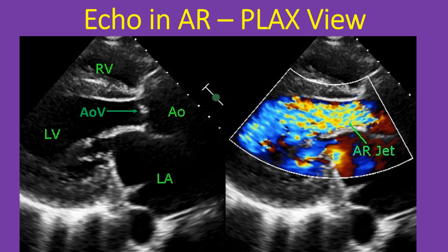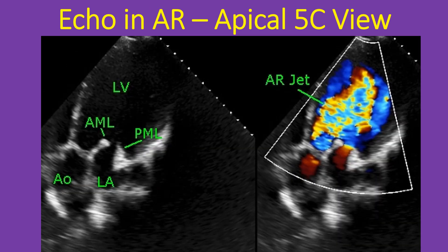Dilated left ventricle, aorta, and left atrium also suggest that the AR is severe. An apical 5-chamber view shows the dilated left ventricle, thickened anterior mitral leaflet, and posterior mitral leaflet. In this view also, the AR jet is large, extending deep into the LV, indicating severe AR.